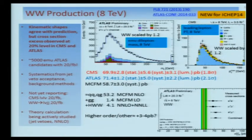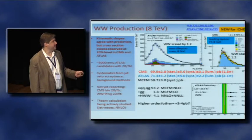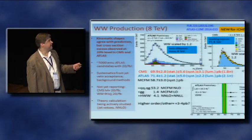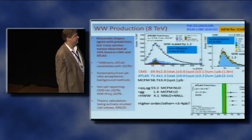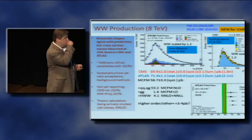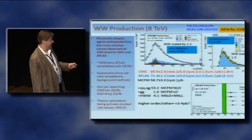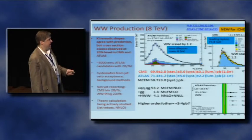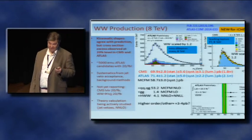In 2012, CMS was the first to measure the WW cross-section at 8 TeV, observing about a 20% excess over standard model predictions with about 2 sigma significance. For this conference, ATLAS has a new result with a very similar conclusion — about a 20% excess at 2 sigma. These measurements are systematics dominated, not statistically. However, there's no evidence of anomalies in the kinematic distributions. I hesitate to be too enthusiastic because not all Run-1 data is in, and the theory calculation is being actively studied, particularly NNLO effects and resummation for jet vetoes which are essential for these measurements.